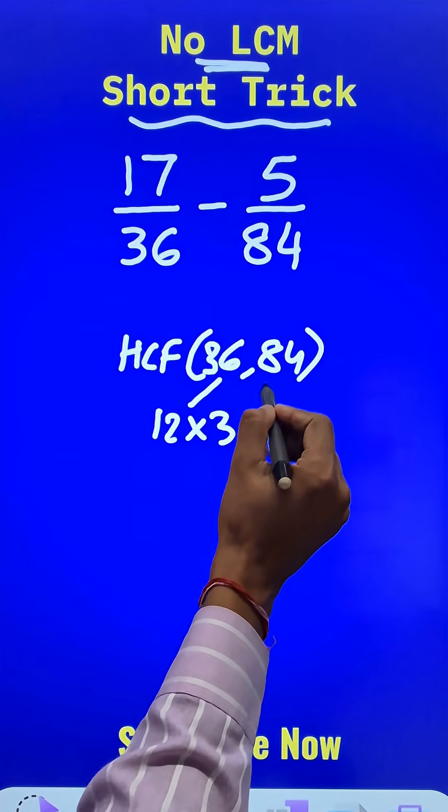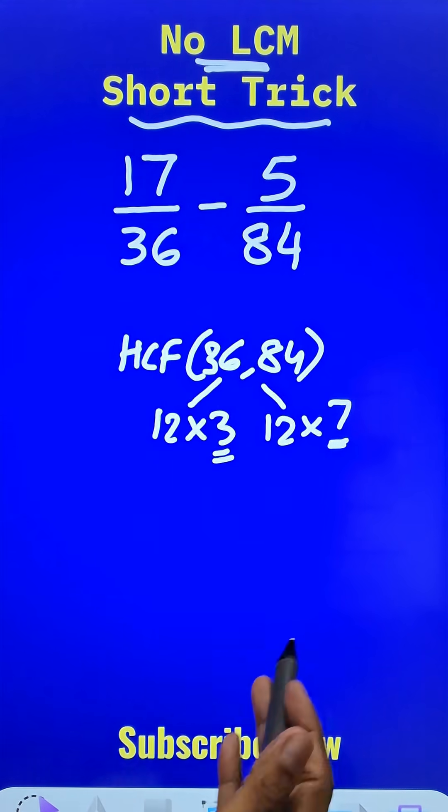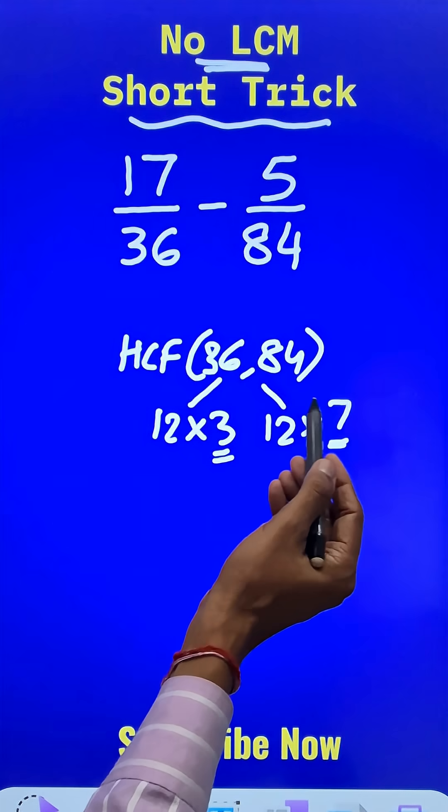This is 12 times 3 and this is 12 times 7. Now 7 and 3 are co-prime and therefore 12 is the highest common factor.